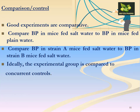Good experiments are always comparative. For example, we can compare the blood pressure of mice fed with salt water to the blood pressure of mice fed with plain water. We can also compare strains of mice fed with salt water to the same strain fed with plain water. Ideally, the experimental group is compared to a concurrent control, generating data that can interfere with or inform our experiment throughout the research journey.